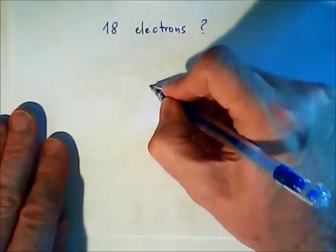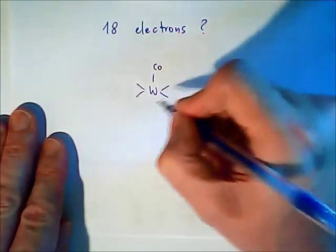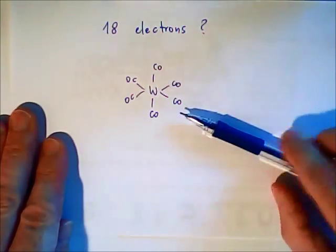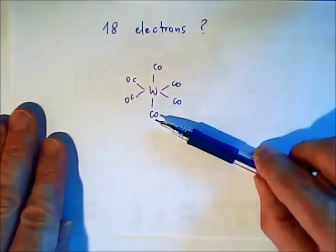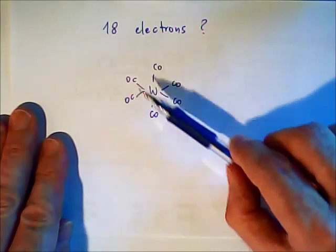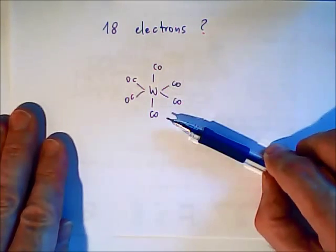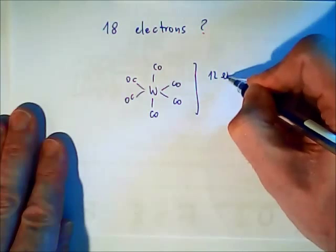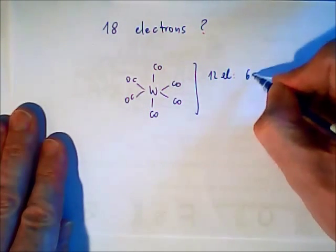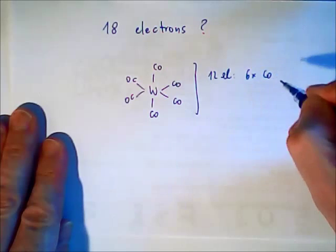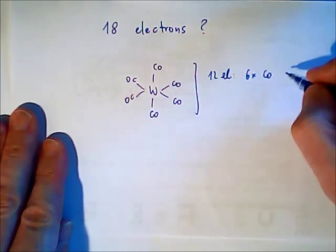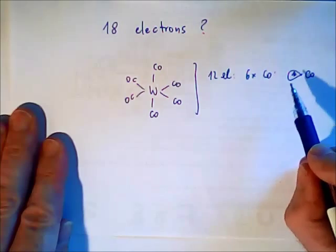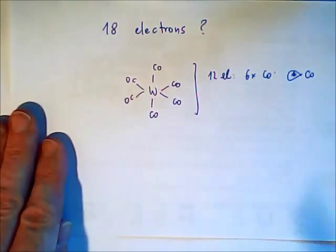18 electrons. I'll give you an example: hexacarbonyl tungsten. The first question is where are these 18 electrons? We cannot just simply count 1, 2, 3, 4 and end up with 12. We have 12 electrons in the bonds. These 12 electrons come from 6 times carbon monoxide. Carbon monoxide has a lone pair, and each ligand has 2 electrons in the bonds.